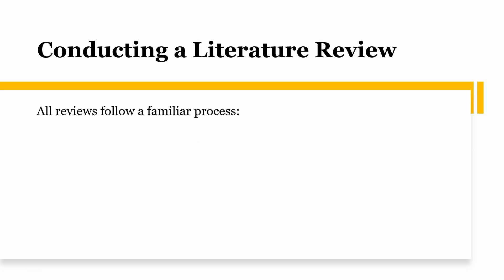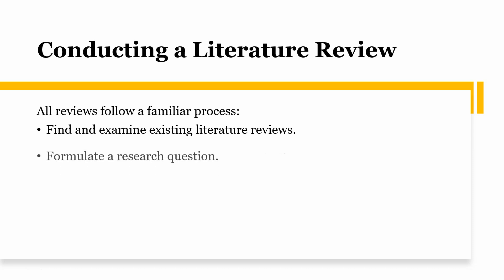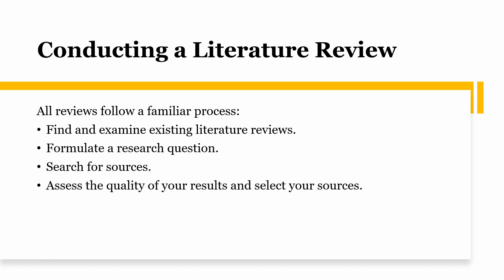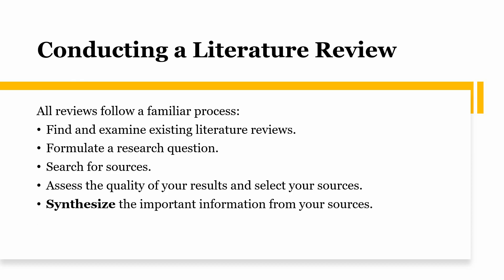All literature reviews follow a similar process: find and examine existing literature reviews; formulate a research question — your systematic literature review will start from a research question; search for sources; assess the quality of your results and select your sources, focusing on peer-reviewed research articles of quality, since it is humanly impossible to analyze and report all papers from every source; synthesize important information by reading through papers, extracting relevant data, using tools or tables to develop a better understanding; and finally, analyze what you found.